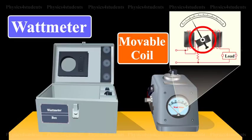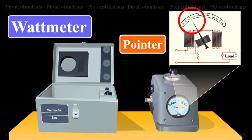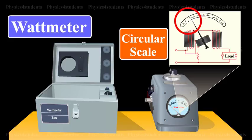The watt meter consists of a movable coil arranged between a pair of fixed coils in the form of a solenoid. A pointer is attached to the movable coil. The free end of the pointer moves over a circular scale.